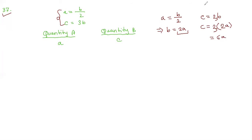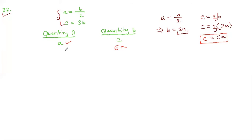Now looking at quantity A, we have A, and in quantity B we have C. Since C equals 6A, we substitute 6A into quantity B. Now the comparison is much simpler — we just need to compare A and 6A.